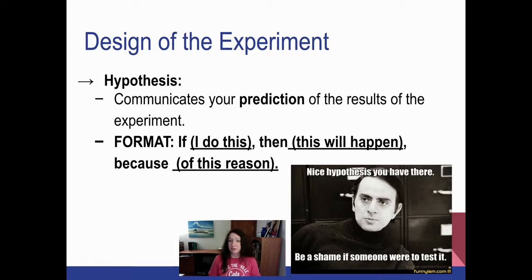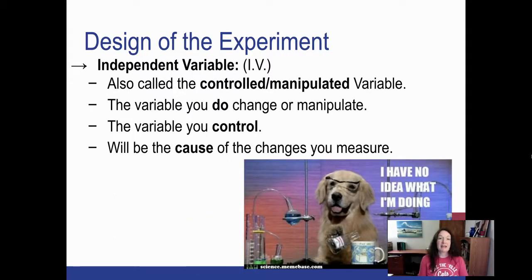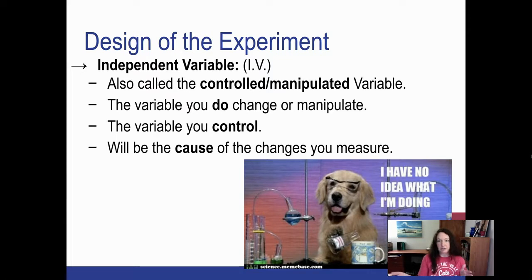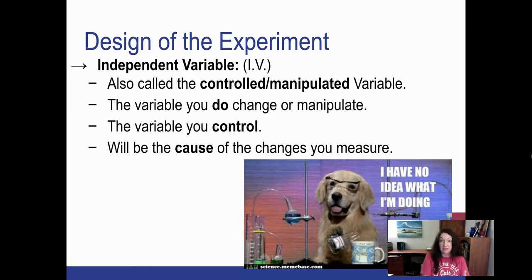When you are designing a controlled experiment, you need to have something called an independent variable. Scientists also call it a controlled variable or the manipulated variable — it's something that you change or manipulate across all of the setups in the experiment. It's a variable that you control and change, and it's going to be the thing that causes a change to happen. Everything else is set up the same; you just have the independent variable changing from setup to setup.